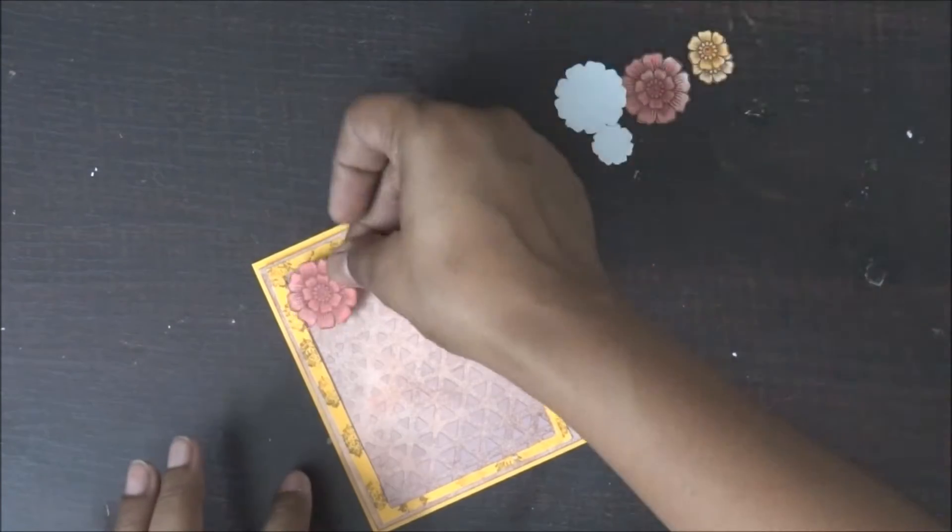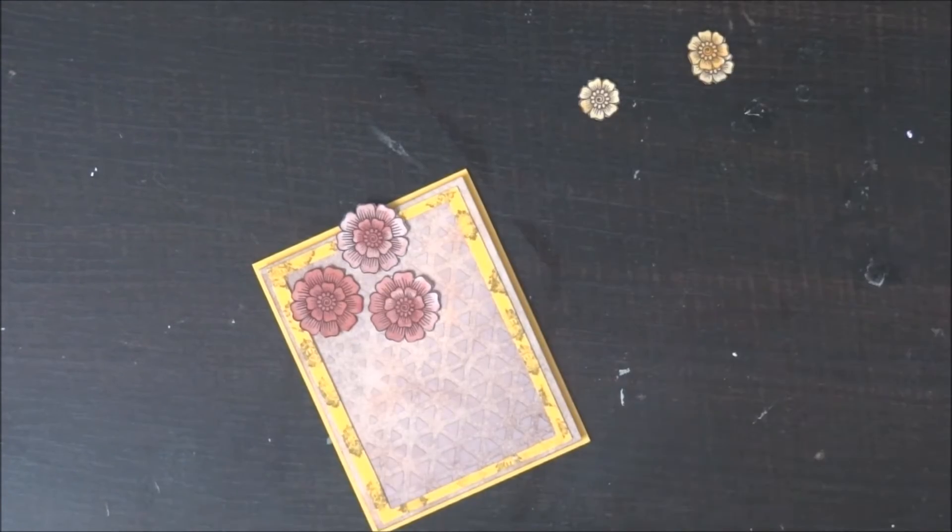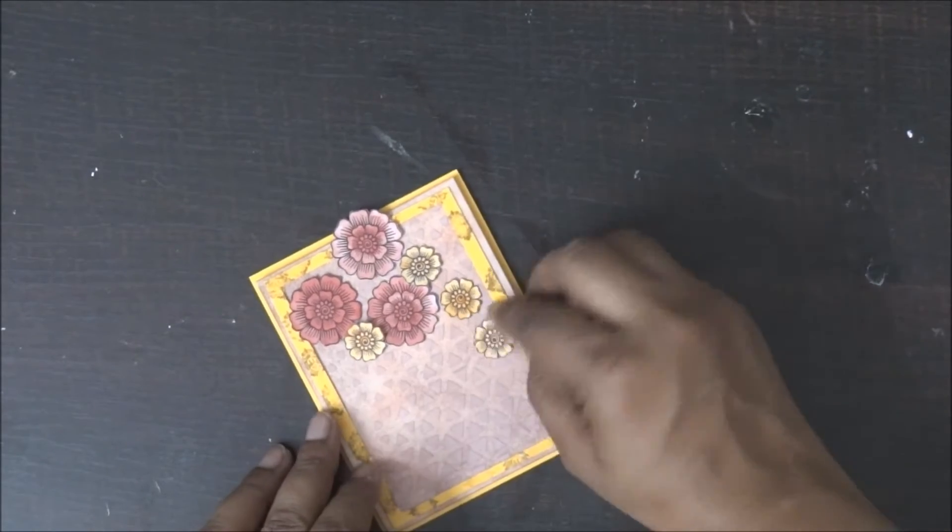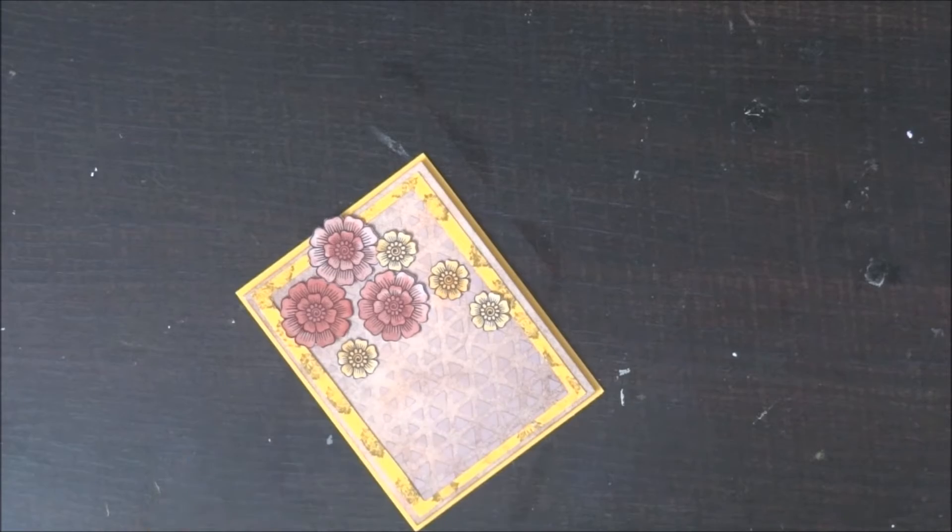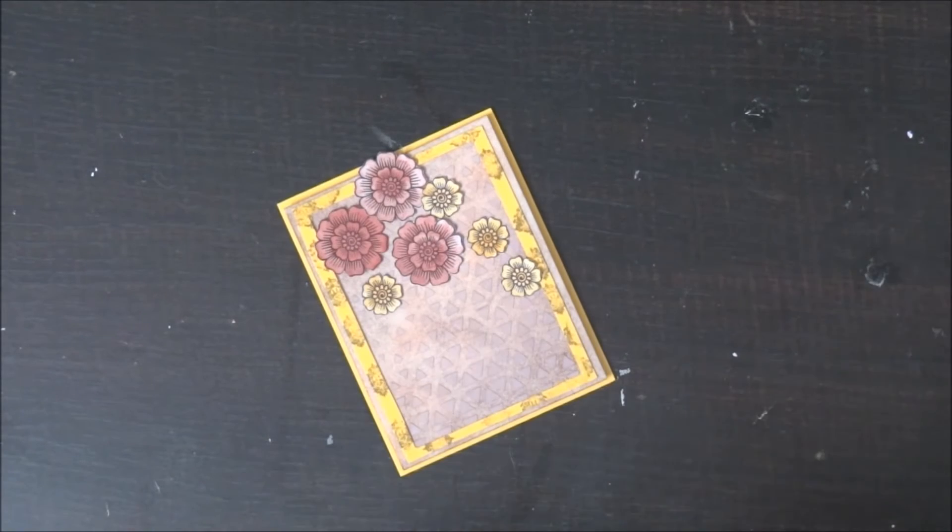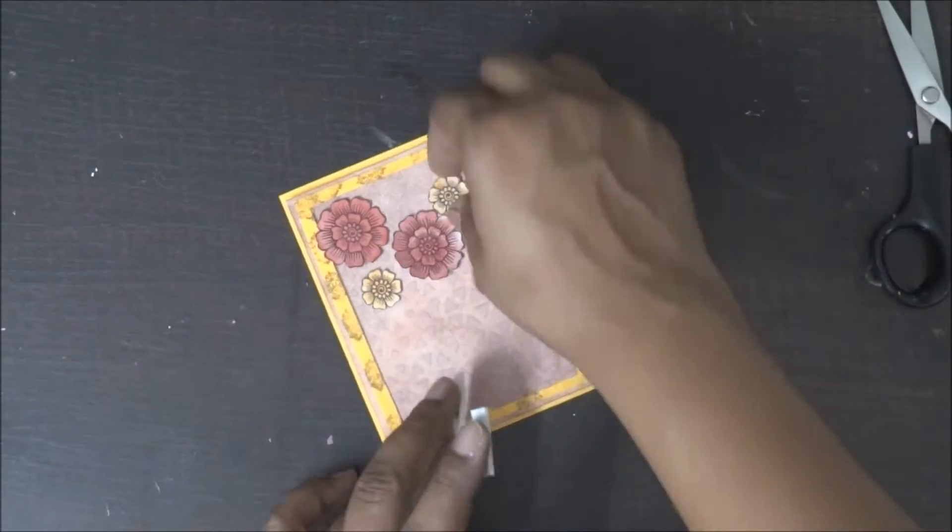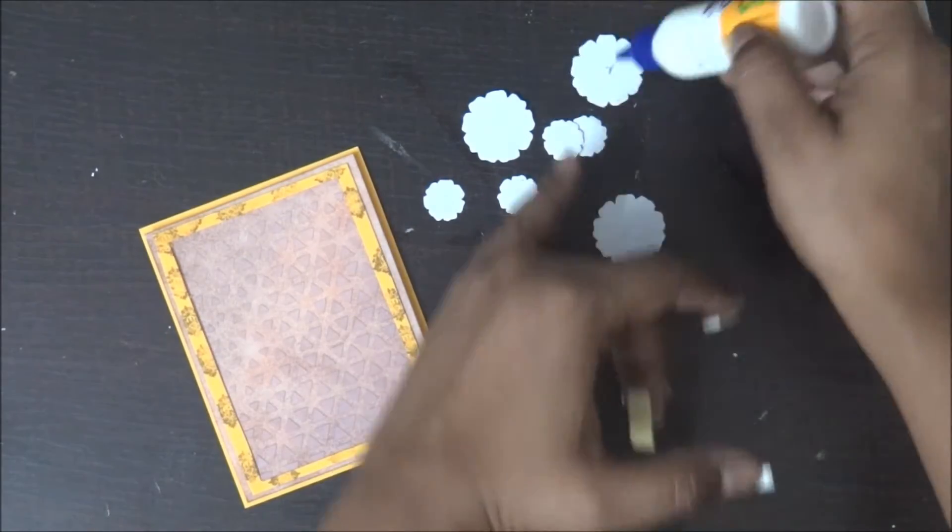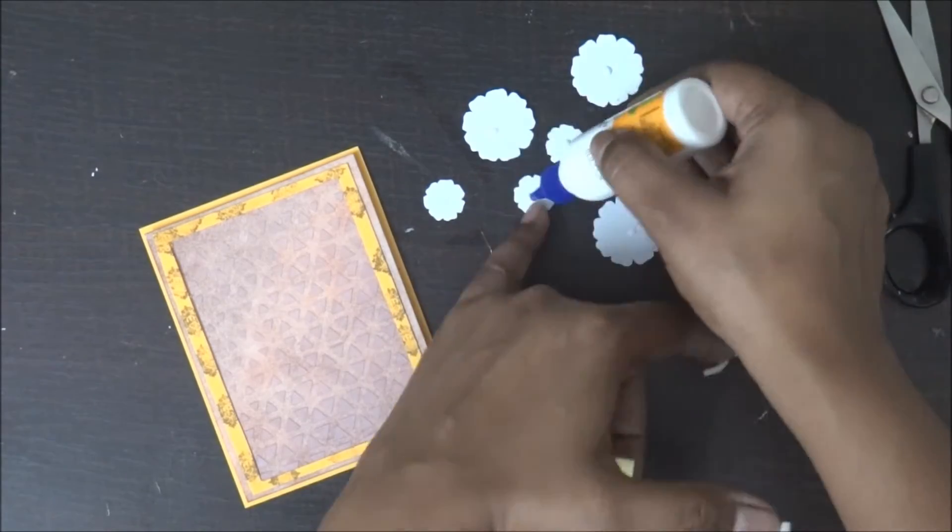So now once the border and my base is ready, I have this pre-cut digital stamp set from Altenew. I have already colored this, and now I'm going to stick this to give it a nice 3D effect. I'm going to use my foam tape below all my flowers and make it look a little more tempting and decorative.